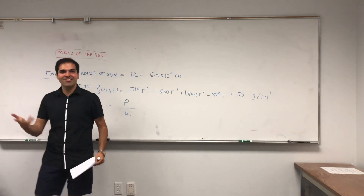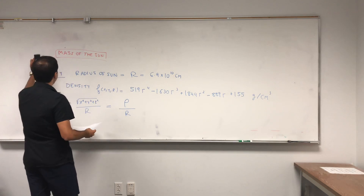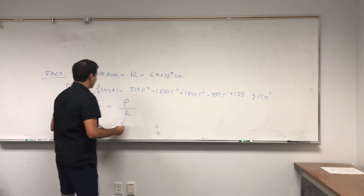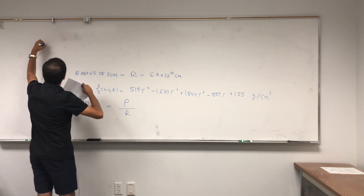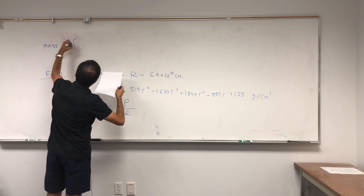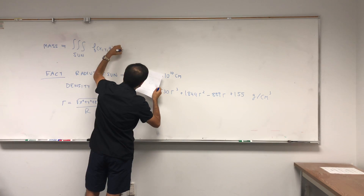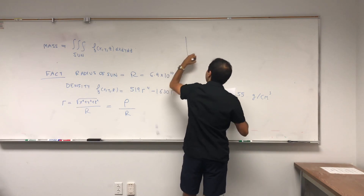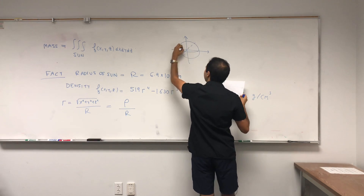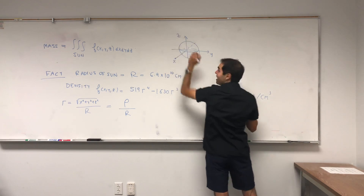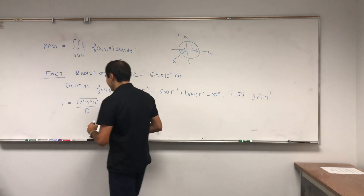Since we see the square root of x² plus y² plus z², it's a good idea to use spherical coordinates. The mass of the Sun is found by triple integrating the density: mass equals the triple integral over the Sun of f(x,y,z) dx dy dz. Think of the Sun as a spherical object, and we'll write this in terms of spherical coordinates.